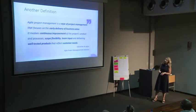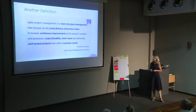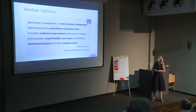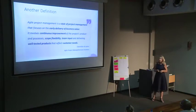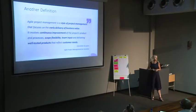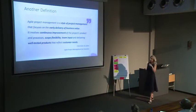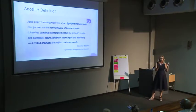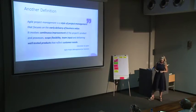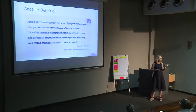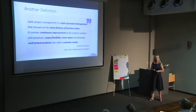Agile project management is a style of project management that focuses on early delivery of business value. It involves continuous improvement of the project's product and processes, scope flexibility, team input, and delivering well-tested products that reflect customer needs. Early delivery means: what are the features the customer wants now — let's do it in the next two weeks and roll it out. Continuous improvement means every two weeks we sit and say what can we learn from the past sprint and how can we do things differently.